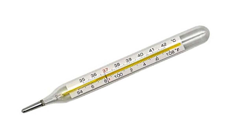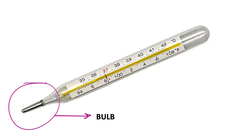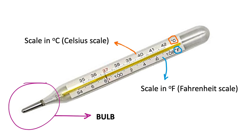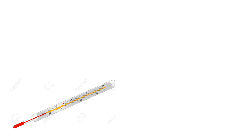Let's look at the basic parts of a thermometer. The part circled in purple is called the bulb - that is what takes the temperature. If you hold the bulb to something hot or cold, that is how you measure the temperature. The orange arrow shows the scale in degree Celsius, marked with °C. Similarly, the blue arrow shows the scale in degree Fahrenheit, marked with °F - you follow whichever scale you need.